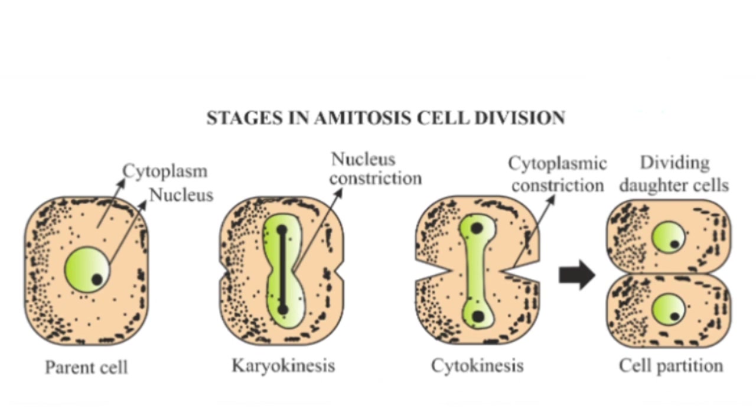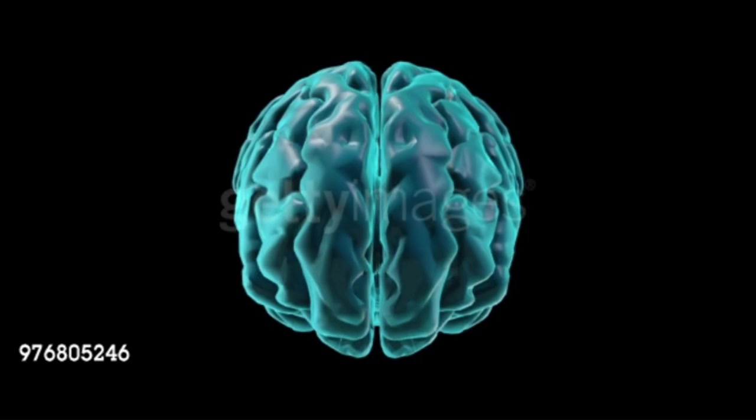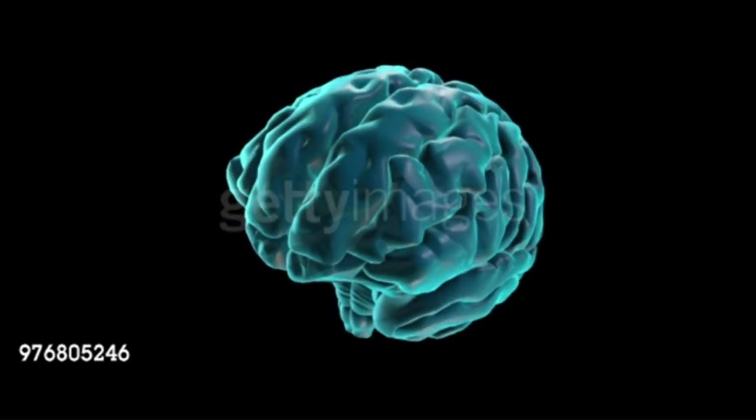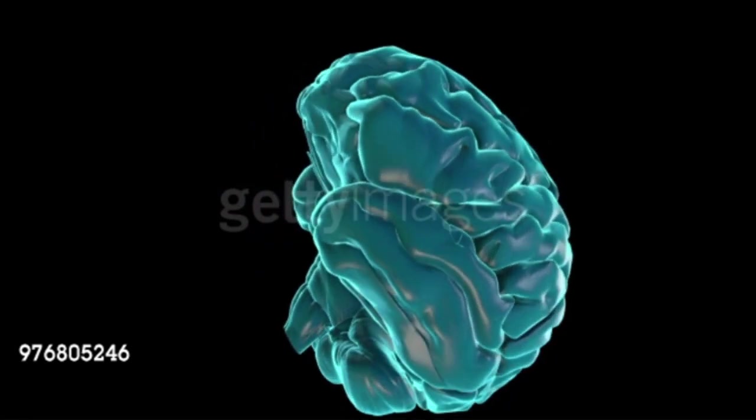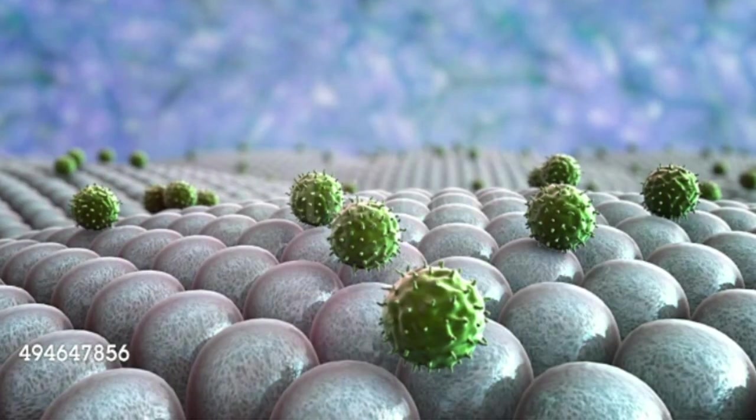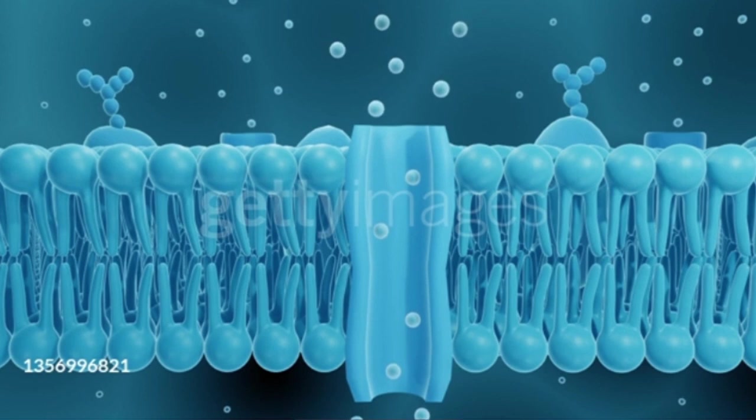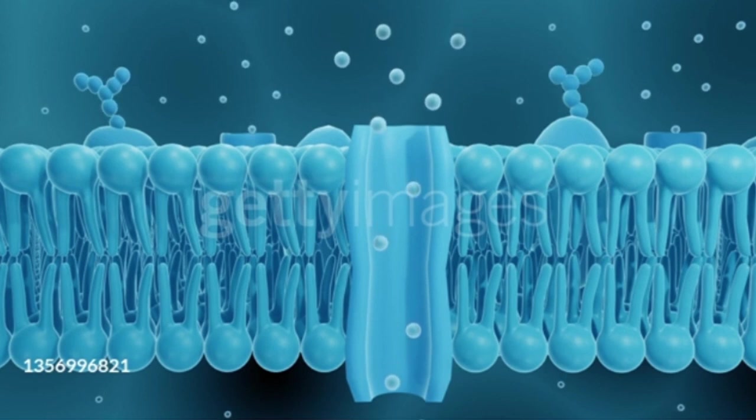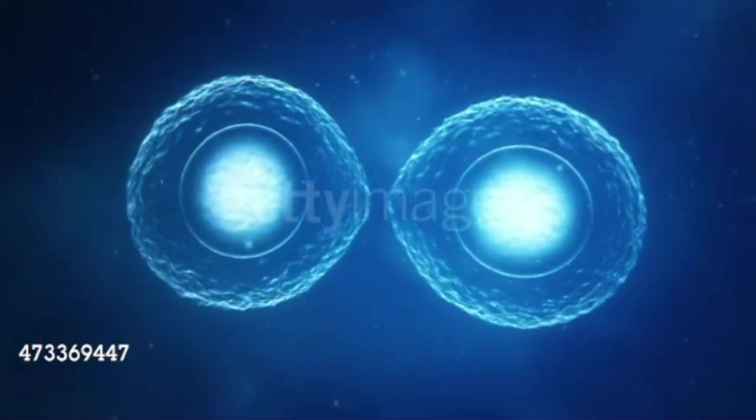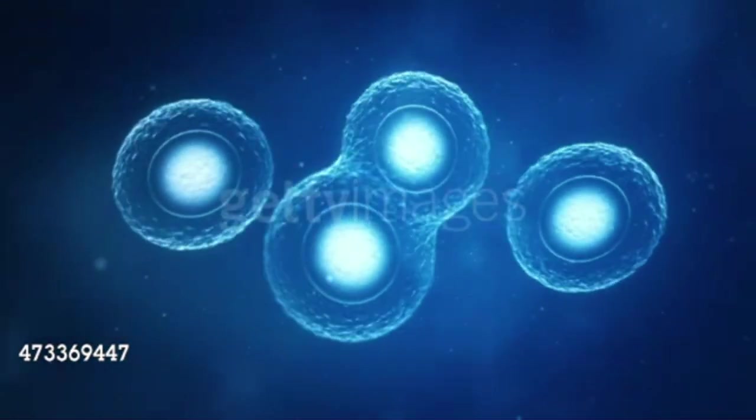Mechanism. Steps: 1. Karyokinesis. 2. Cytokinesis. 1. Karyokinesis: Division of nucleus, for which the nucleus develops constriction in the center and becomes dumbbell-shaped. Constriction deepens and divides the nucleus into two. 2. Cytokinesis: Plasma membrane develops a constriction along nuclear constriction. It deepens centripetally and finally divides the cell into two daughter cells.